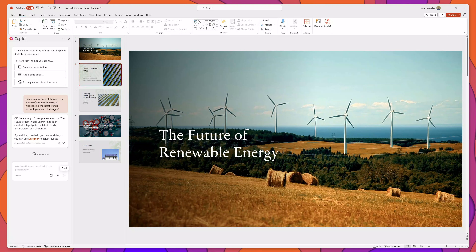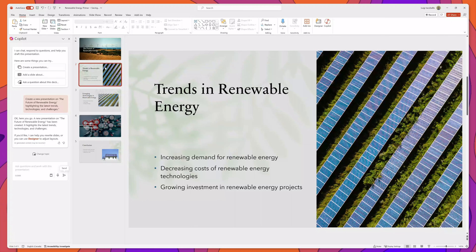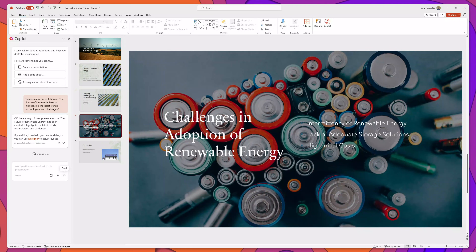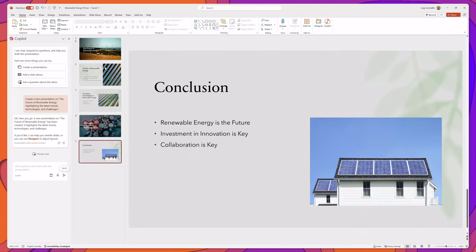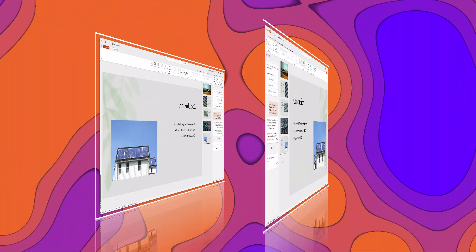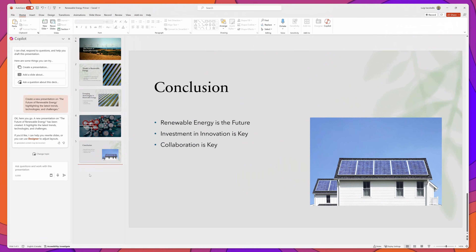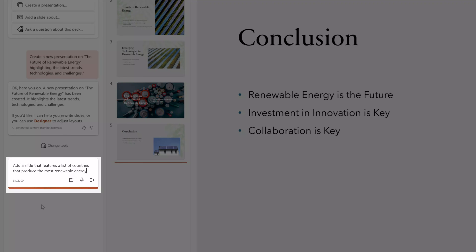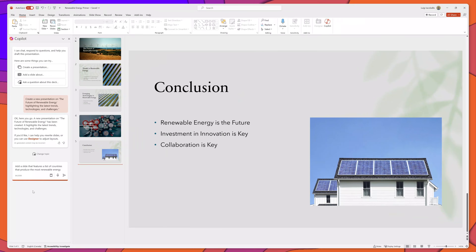You can see it included a title slide, a slide that reads 'Trends in Renewable Energy,' a slide titled 'Emerging Technologies,' a slide on 'Challenges in Adoption of Renewable Energy,' and a concluding slide. You can also use Copilot to add additional slides to your presentation. I've entered a prompt that reads 'add a slide that features a list of countries that produce the most renewable energy.' I'll go ahead and click enter.